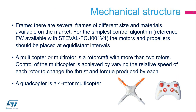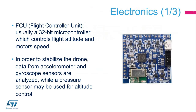There are several frames of different sizes and materials available on the market. For our simplest control algorithm — the reference firmware available with STEVAL FCU001V1 — the motors and propellers should be placed at equidistant intervals. The main algorithm for flight control usually runs on a 32-bit microcontroller, which either directly controls the speed of each motor or communicates to them via an external electronic speed controller. In order to stabilize the drone, the data coming from the accelerometer and gyroscope sensors are analyzed, while the pressure sensor may be used for altitude control.